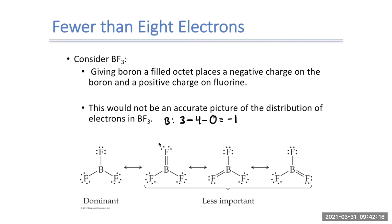Now let's look at the double-bonded fluorine — each of the non-dominant structures has one fluorine with a double bond. Fluorine, being a halogen, has seven valence electrons. With two bonds and four lone pair electrons, that gives: seven minus two minus four equals plus one. So the double-bonded fluorine ends up with a formal charge of plus one, and boron has a formal charge of minus one.